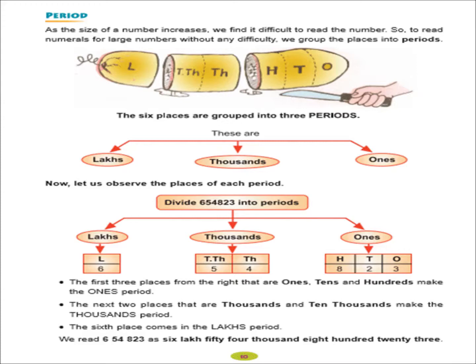And the periods of 6 digit numbers are 1s, 1000s and lakhs which is given above in the chart. Now, let us observe the places of each period. Here, the numeral is given here 6,54,823. And now, we have to insert each and every digit into periods. So, first see the periods. There are 3 periods: 1s, 1000s and lakhs. Now, according to the place value, we insert the digit into the periods. 6,00,000. So, you put the 6 digit at the place of lakhs. Then, 54,000. So, 5 will be at the place of 10,000 and 4 will be the place of 1000. Next, 800. So, insert the 8 at the place of 100, 2 at the place of 10s and 3 at the place of 1s.